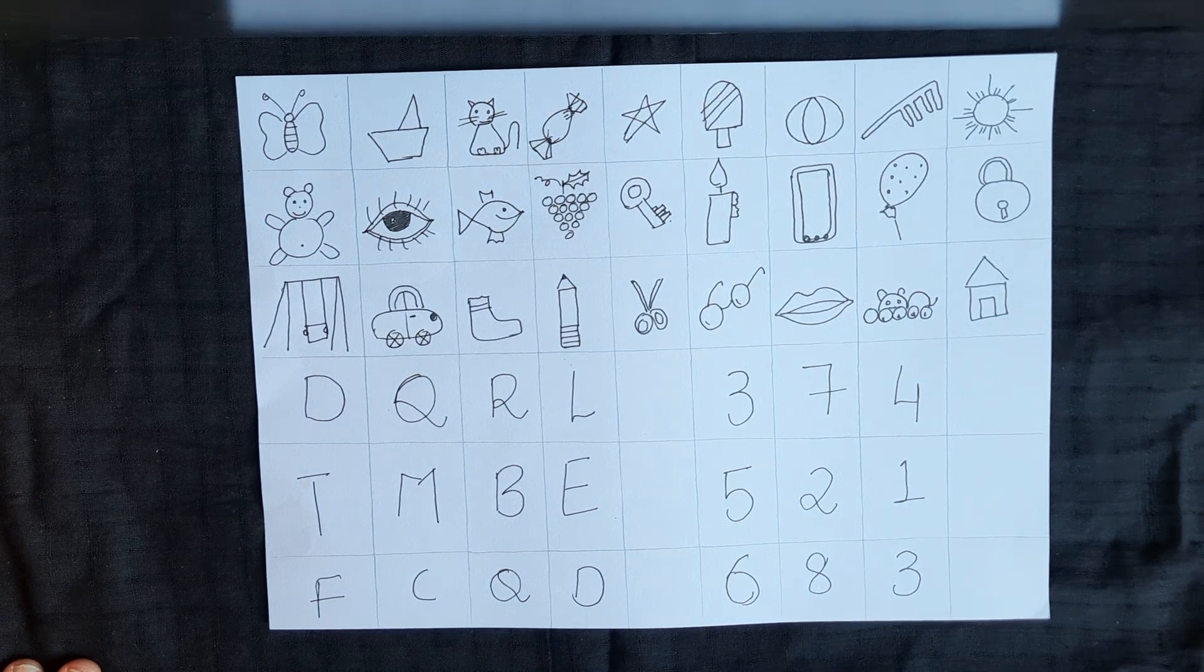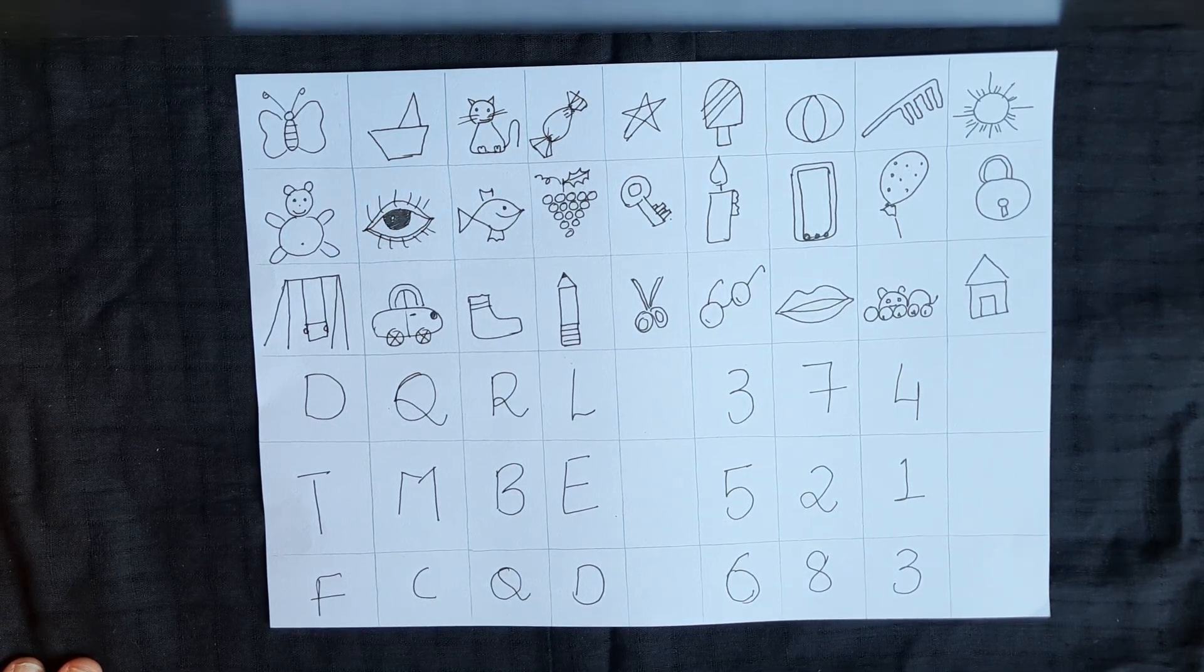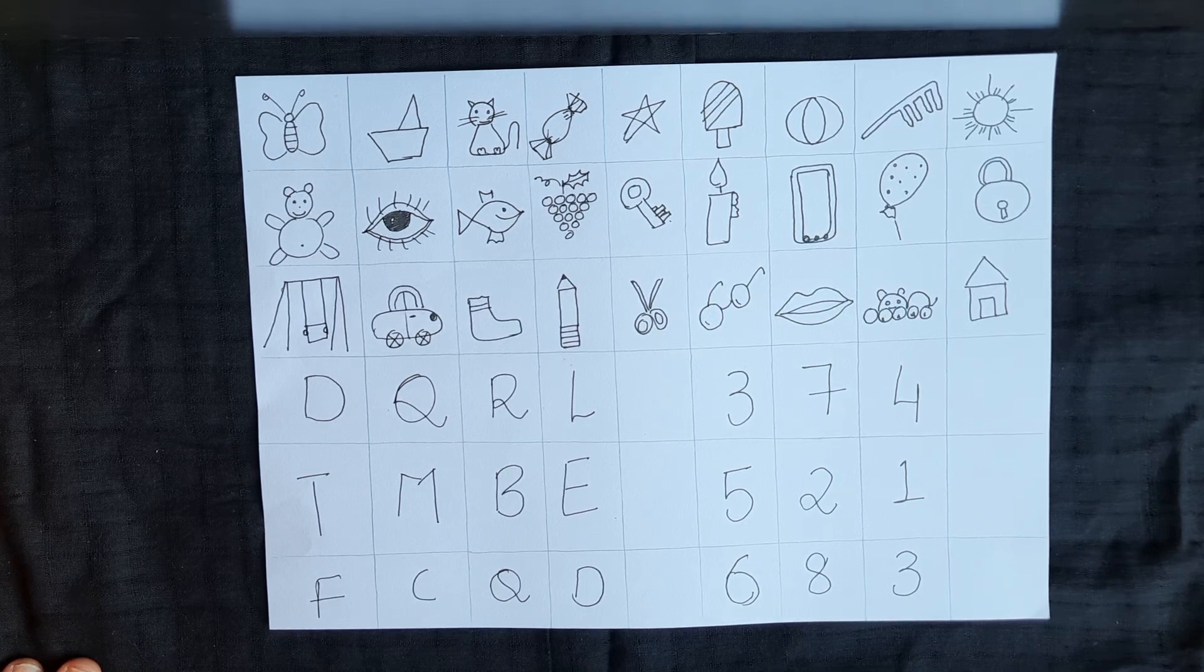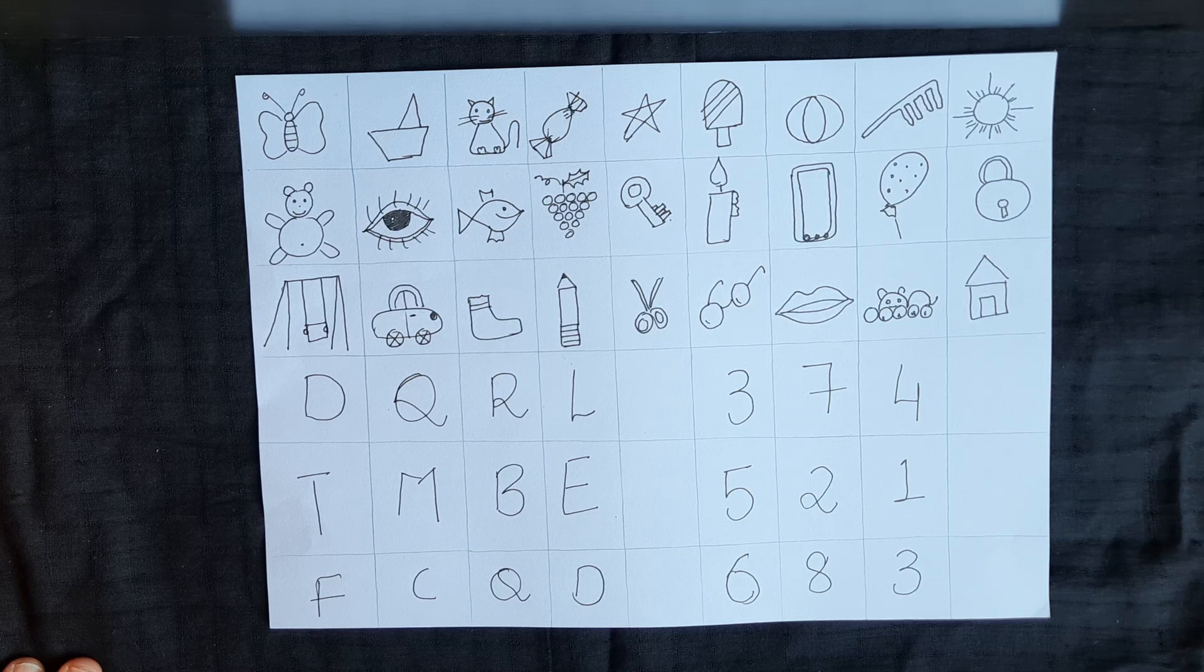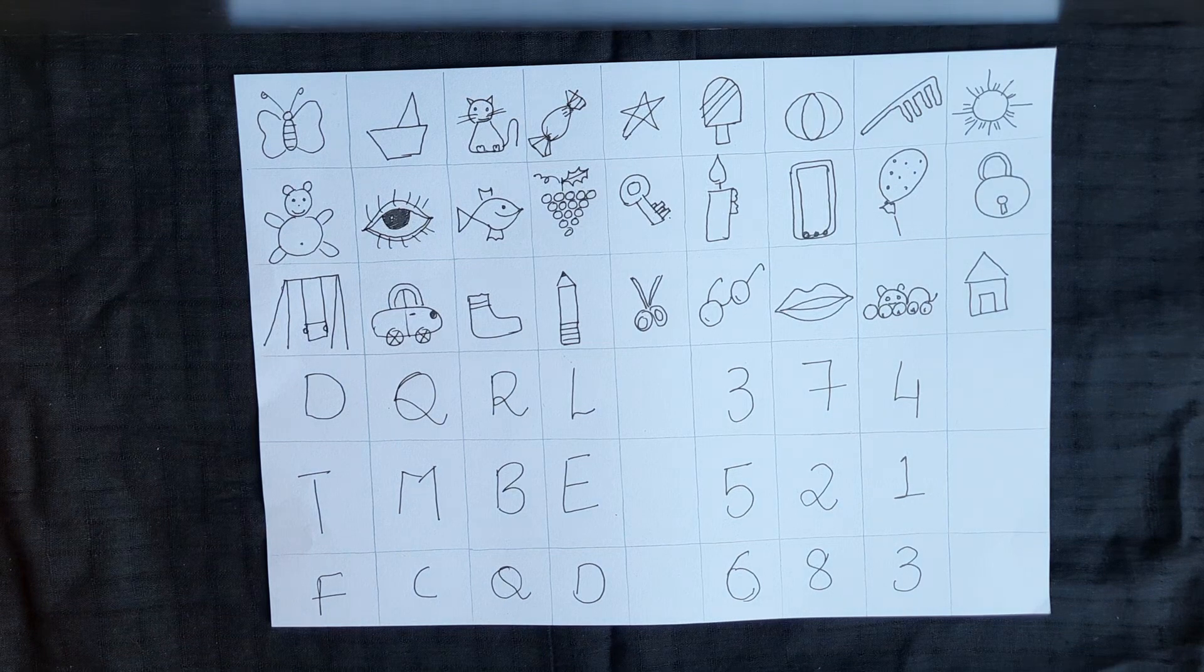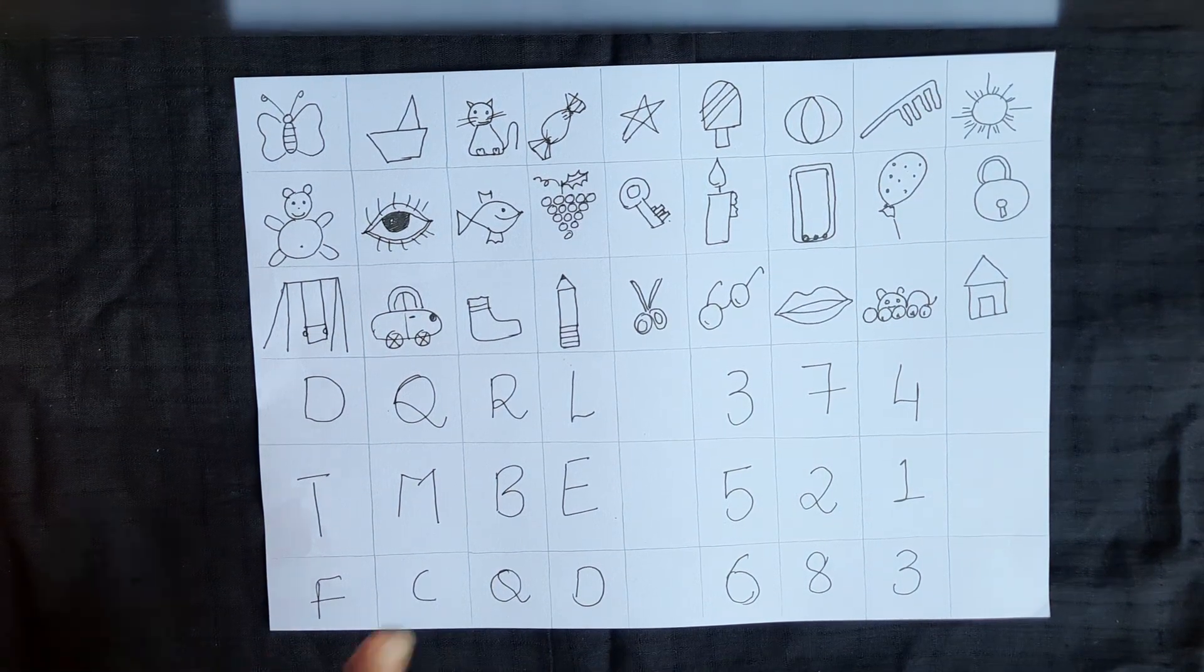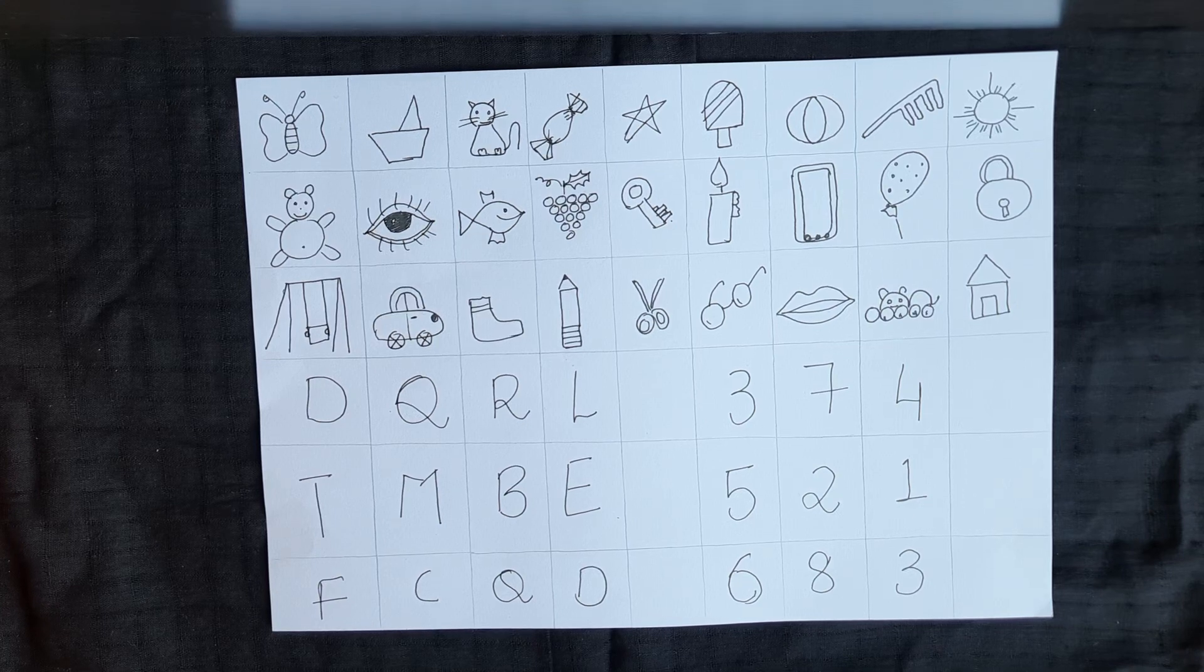The next game is pointing to description. Whichever is a picture you describe, the child has to point out. You say I want you to show me something that swims in water, so the child points to the fish. Then you say I want something that you can cut with, child points to the scissor.